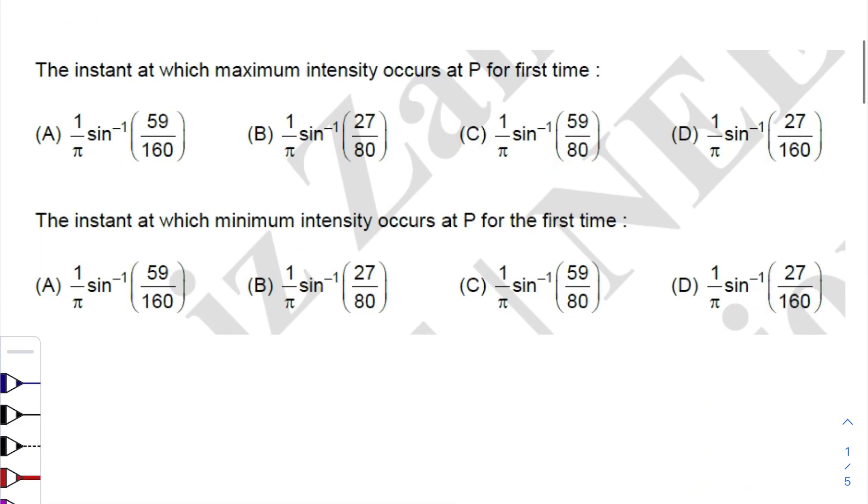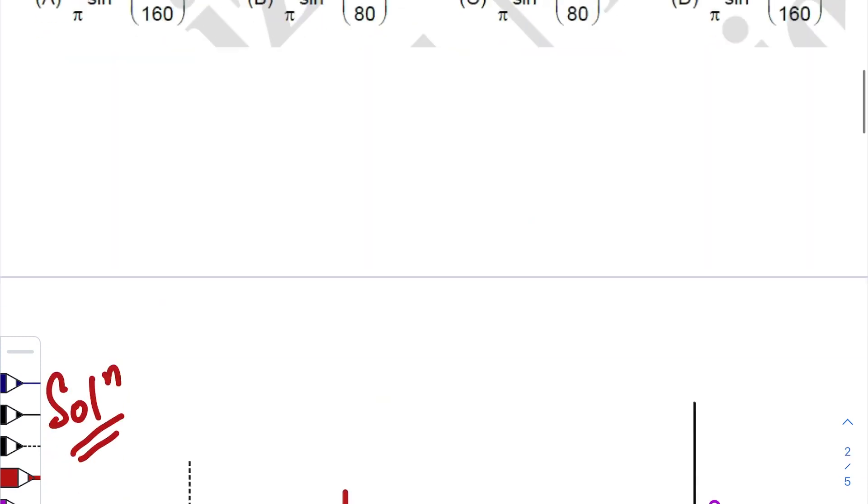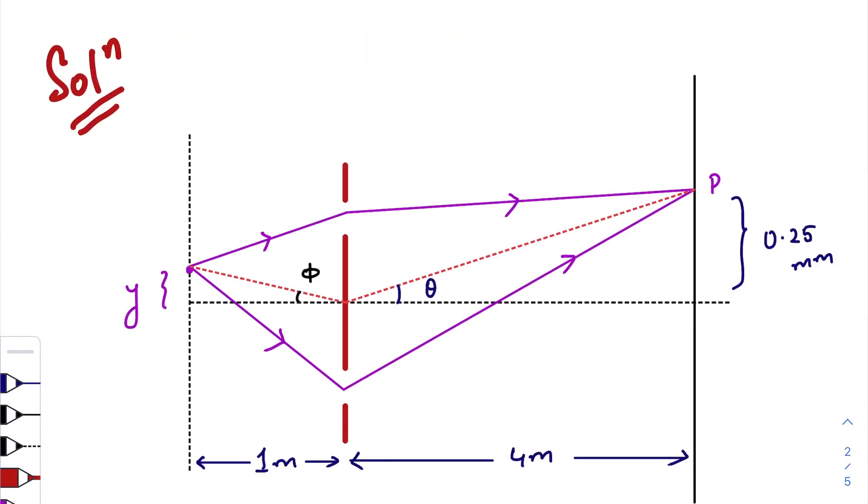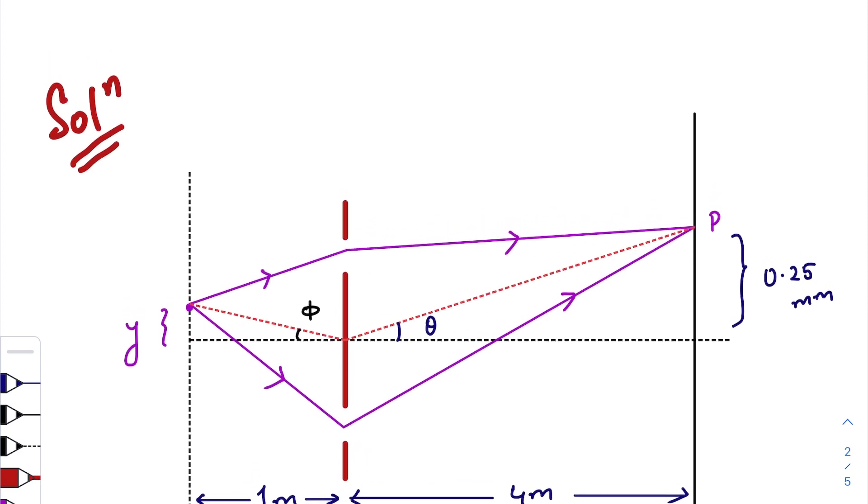Let us check the first question. The instant at which maximum intensity occurs at p for first time. So for maximum intensity we all know that the path difference at that point should be an integral multiple of lambda. So first we need to find out the path difference.